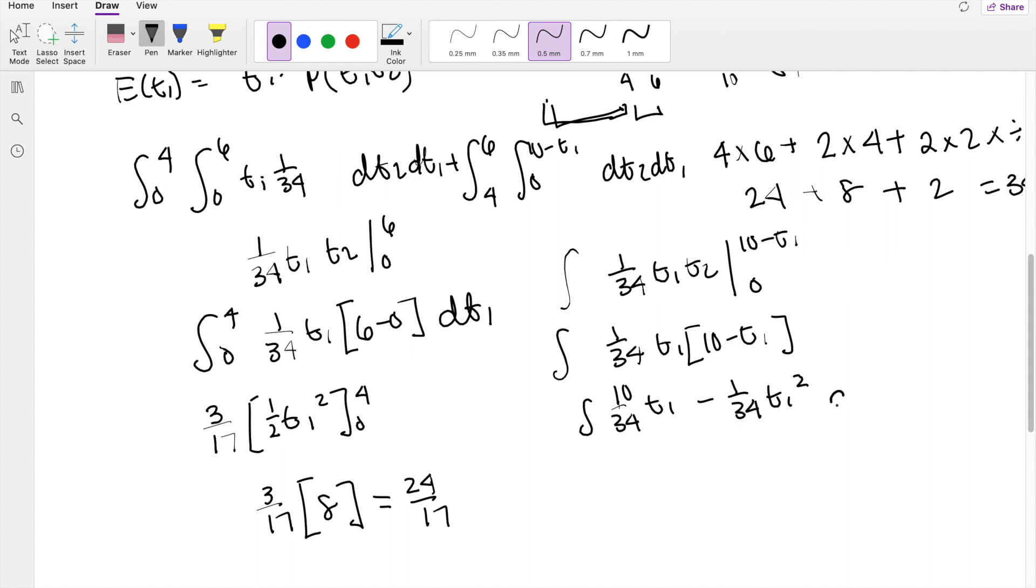Alright, integrating dt1, you get t1 squared dividing by 2 here, you get 5 over 34 minus t1 cubed. 34 times 3, that's going to be equal to 102.